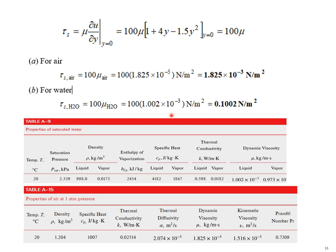For water, we can determine at 20 degrees C from table A-9 that the dynamic viscosity is 1.002 times 10 to the minus three. So the wall stress for water is much higher than for air, which you might expect. Liquids have a stronger friction force against the wall than air.